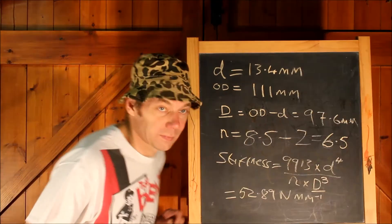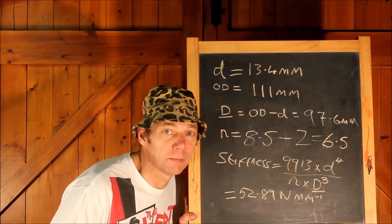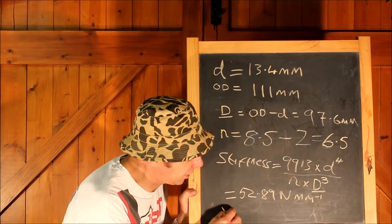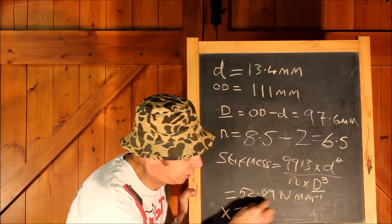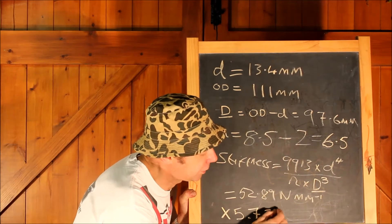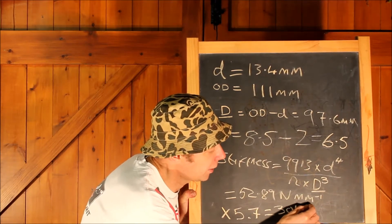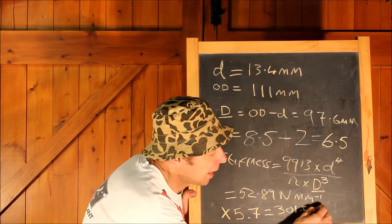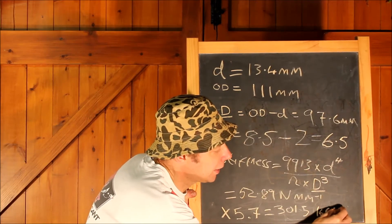What per what? That's right Tove, I said newtons per millimeter. If you want it in the more familiar unit of pound force per inch, then times that number by 5.7, which in this case equals 301.5 pound force per inch.